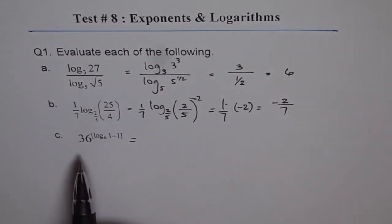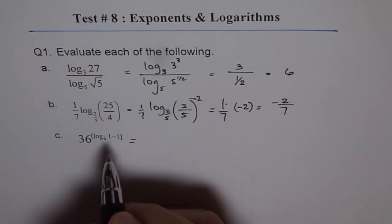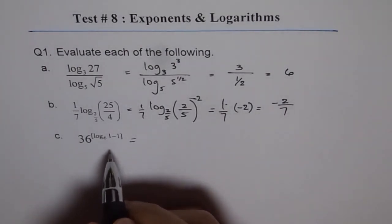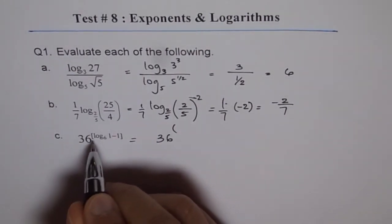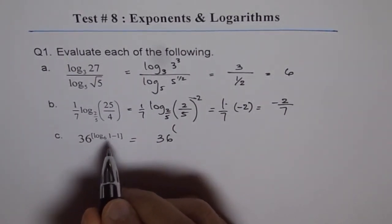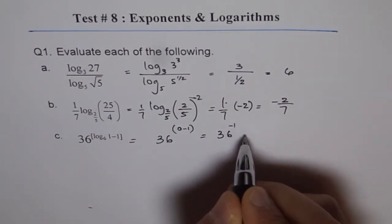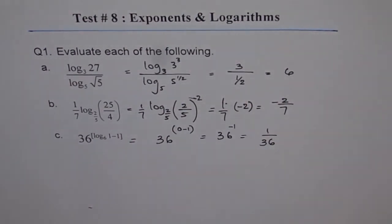C, it's kind of interesting and I find students doing a lot of mistakes here. 36 to the power of log of 6, 1 minus 1. So here, what is log of 6 of 1? Log of 1 is always 0. So we get here 36 to the power of log of 6 of 1 is 0. So we get 0 minus 1. So it is 36 to the power of minus 1. So we get 1 over 36 as our answer. These are the 3 solutions for individual 3 questions.